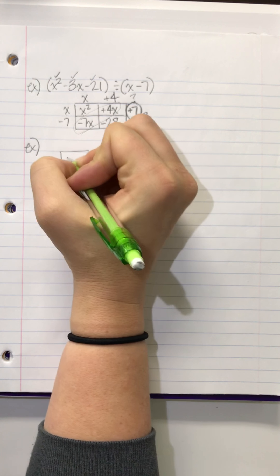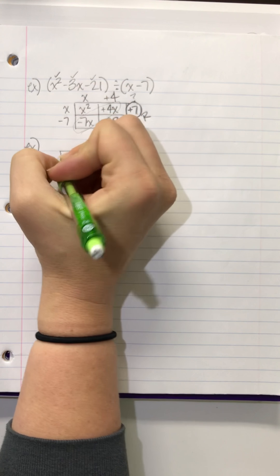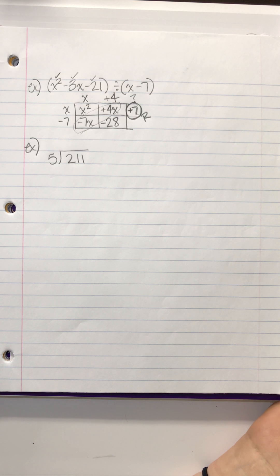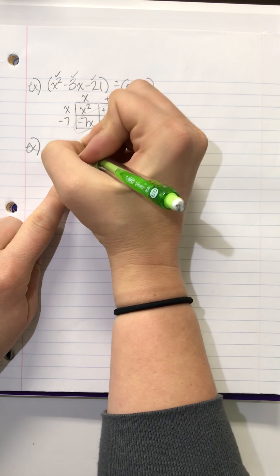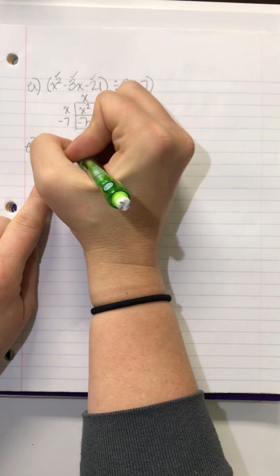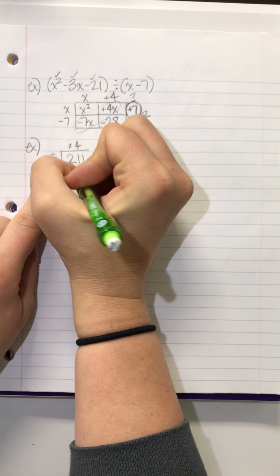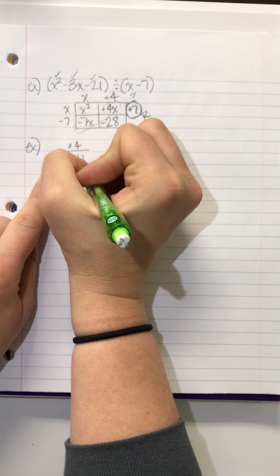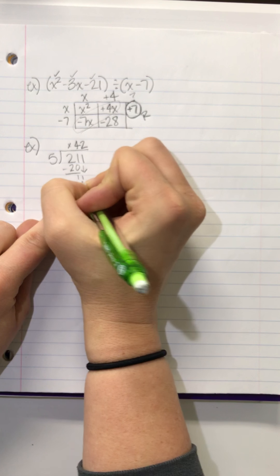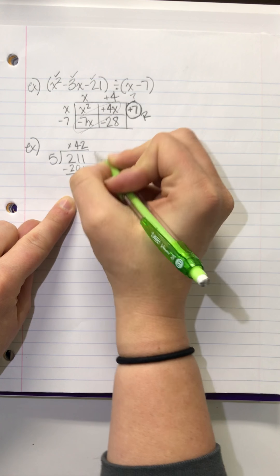Pause that thought. I'm going to come back and explain what to do with that remainder by showing you a number version. Hold that question, Alex. I think you're on the right track. So, let's do 211 divided by 5. 5 does not go into 2. How many times does it go into 21? 4. 4 times, which makes 20. And you pull down that 1. How many times does 5 go into 11?